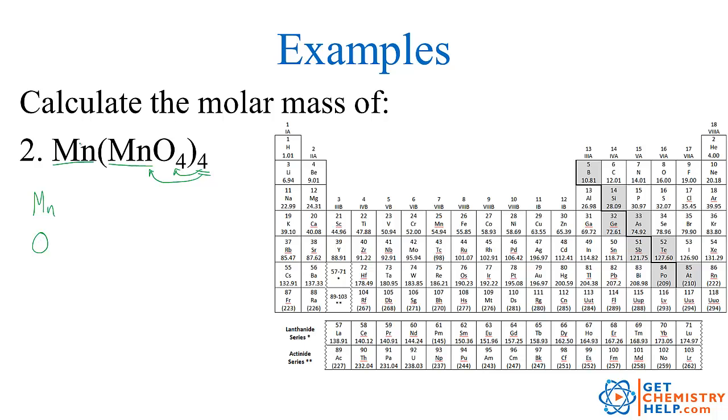So I have one manganese outside but then I have four more inside so that's a total of five manganese. So manganese is right here it has a mass of 54.94. So 5 times 54.94. That's a total of 274.70 grams per mole.